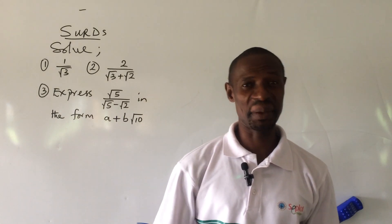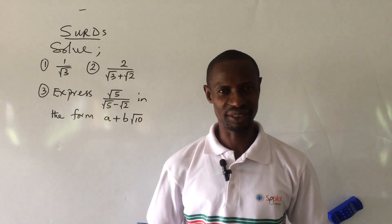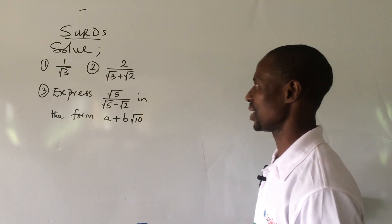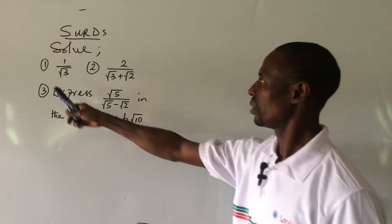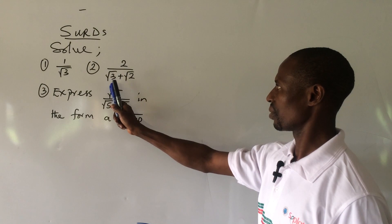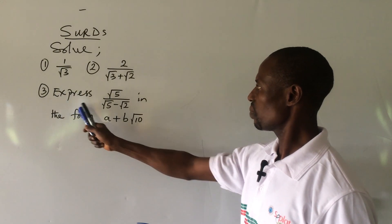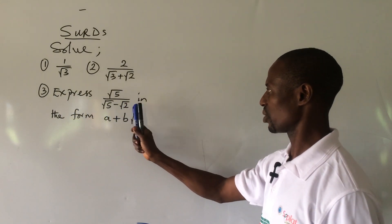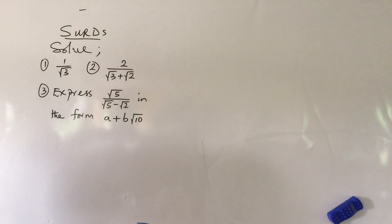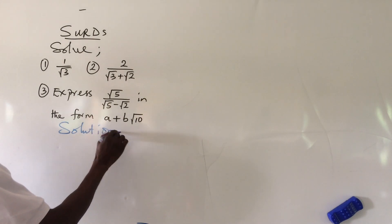Welcome to Online Math TV. My name is Jake's Animal. If you are new to this channel, kindly subscribe and turn on the bell notification button, because this is the channel where you learn mathematics every day. Now we have a little challenge to solve today. Question one: simplify 1 over root three. Question two: simplify 2 over root three plus root two. Question three: express root five over root five minus root two in the form a plus b root ten.